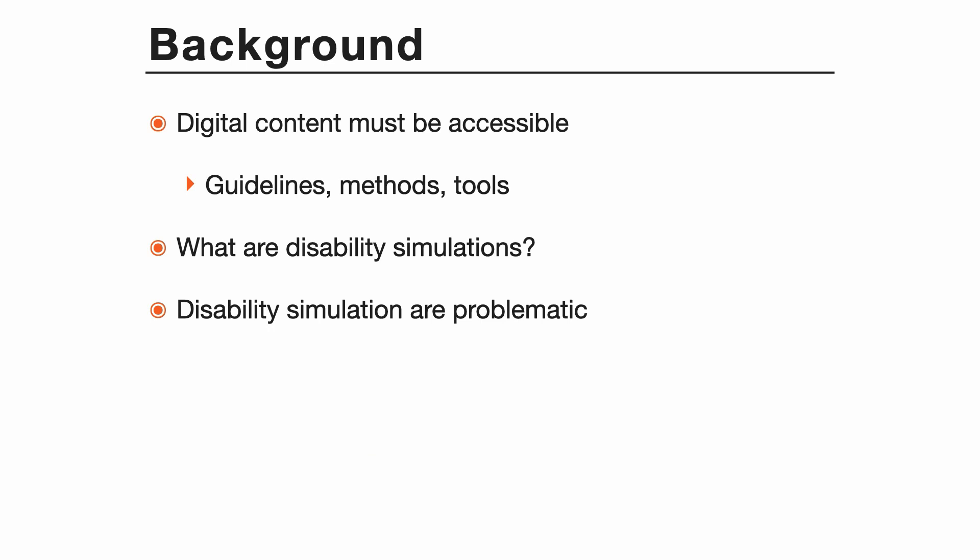Digital designers should make their work accessible, and there are many different resources available to do this, such as guidelines, methods and accessibility tools. Designers sometimes use disability simulations to evaluate the accessibility of their work. A designer may enable a screen filter that adjusts colours to simulate colour blindness, or they may wear a blindfold with the intention of identifying how a blind person might use a system.